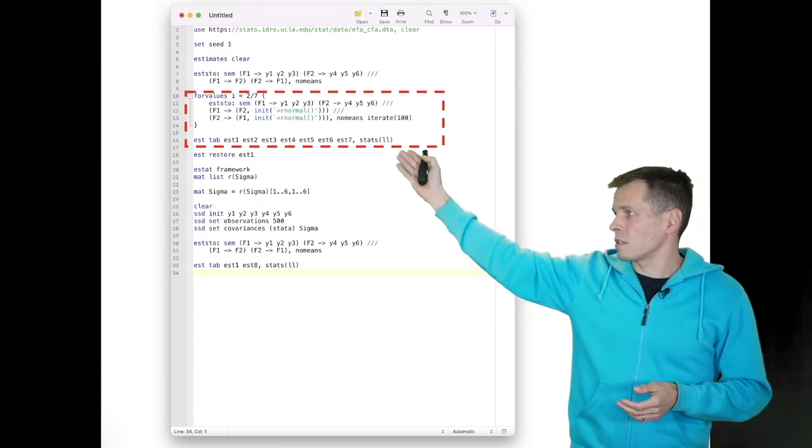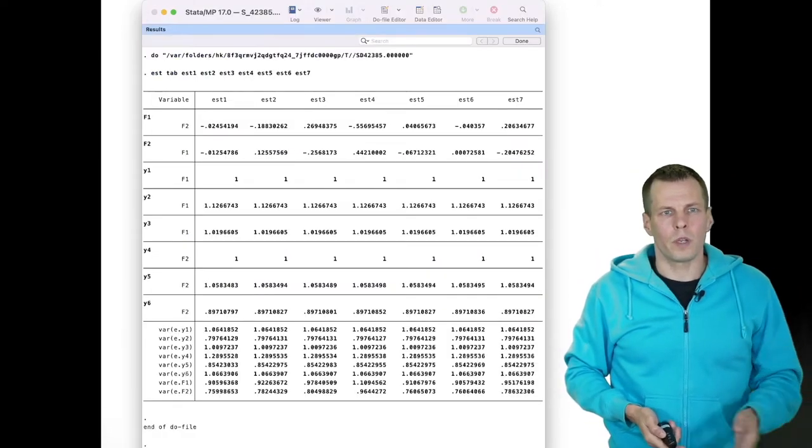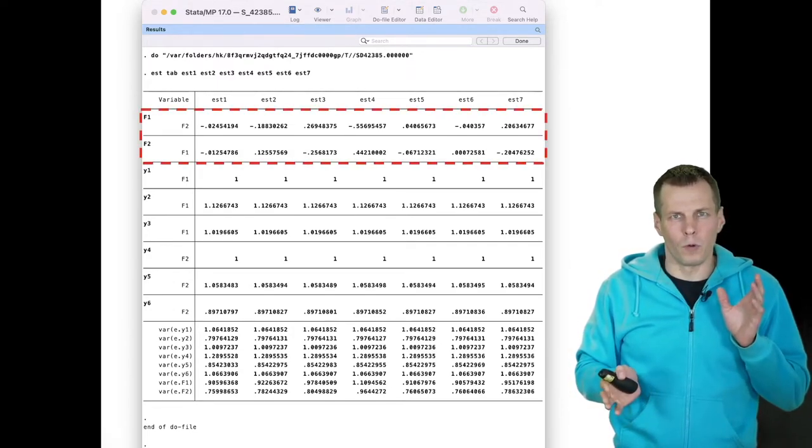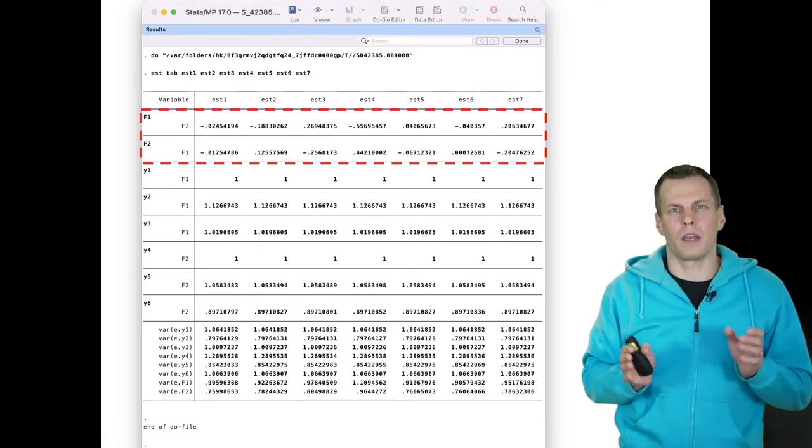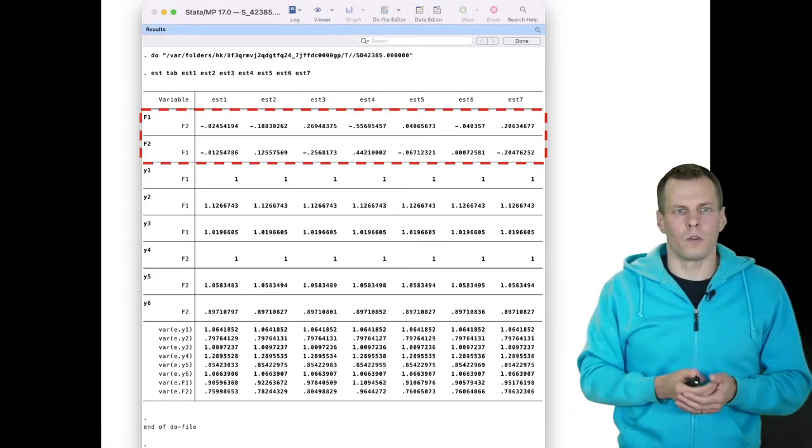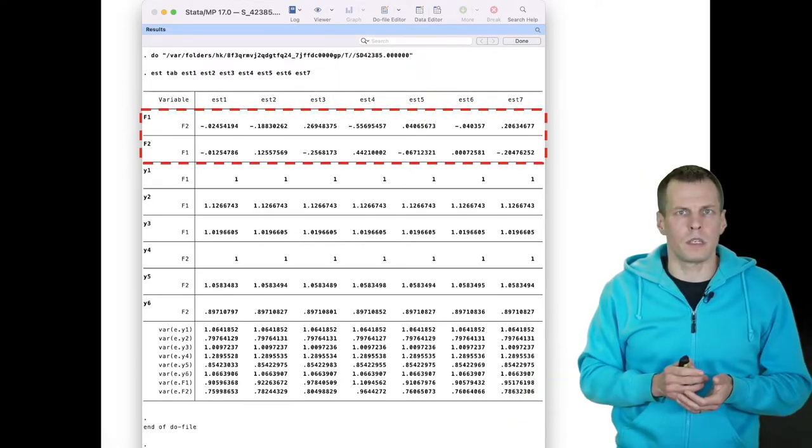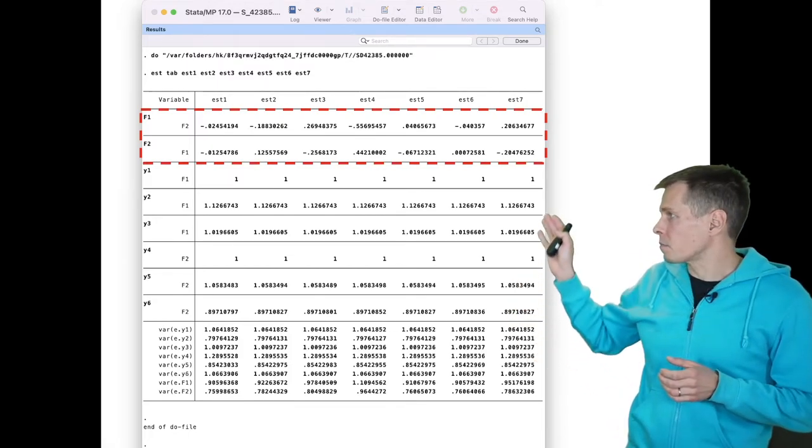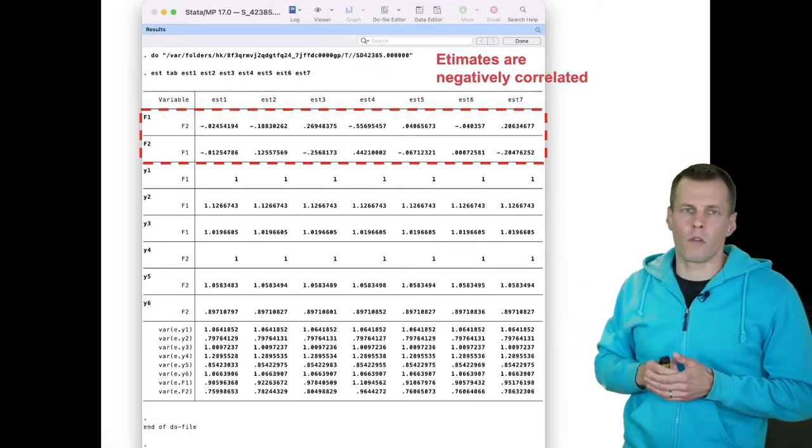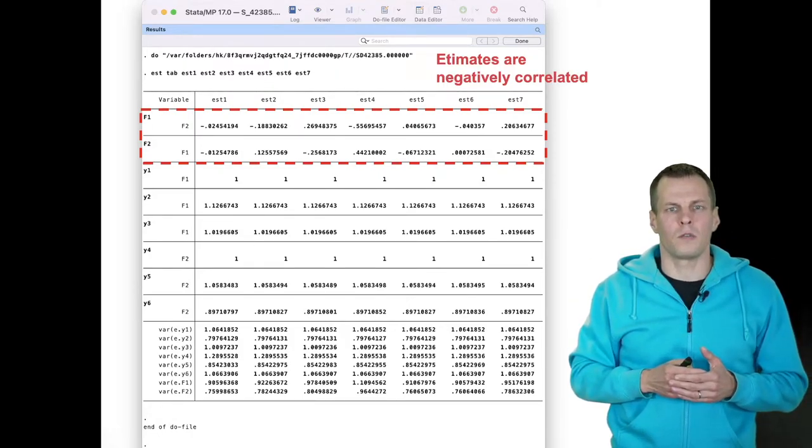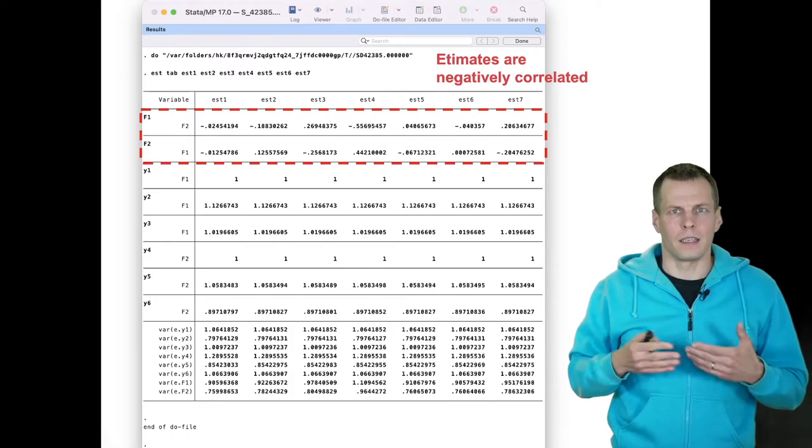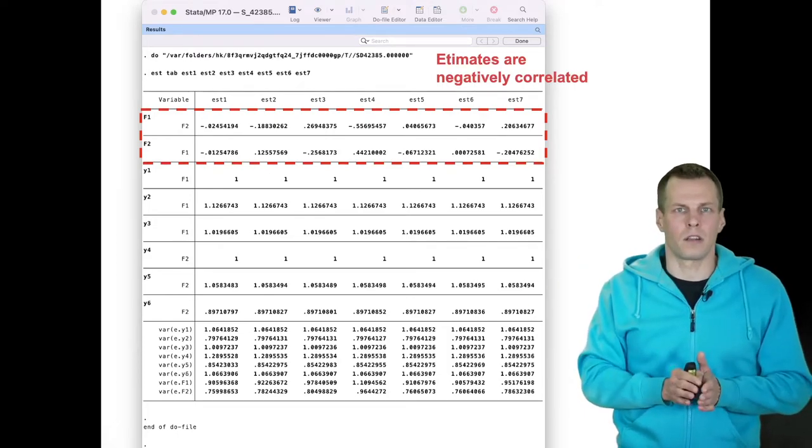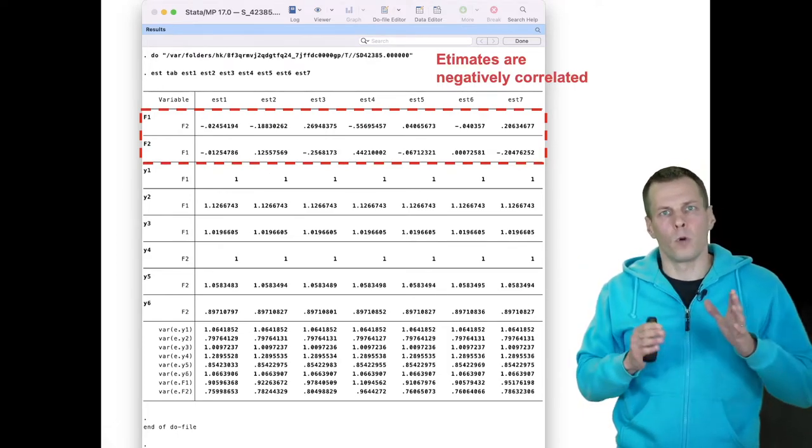And then I tabulate these models and the likelihoods. What we will see is that we get different sets of estimates for both regression paths depending on the starting values. The likelihood of these models are the same. It appears to be missing from my slides, but you would see that it's actually identical. And these estimates are also highly correlated. So when one goes up, another one goes down and that indicates there's a trade-off. So they are correlated across repeated samples.